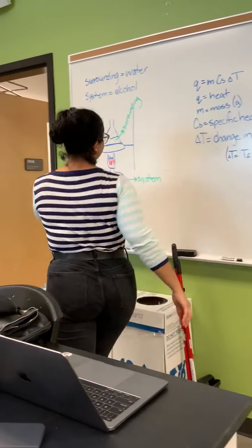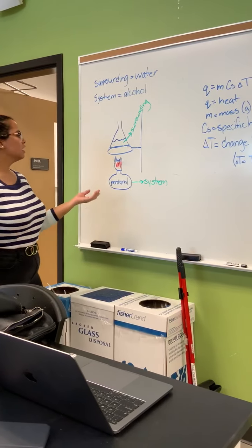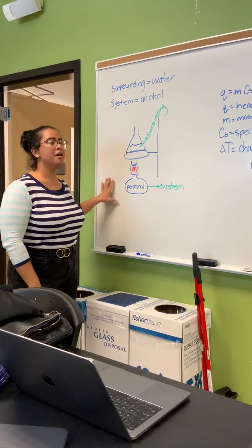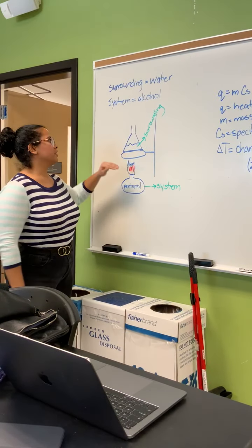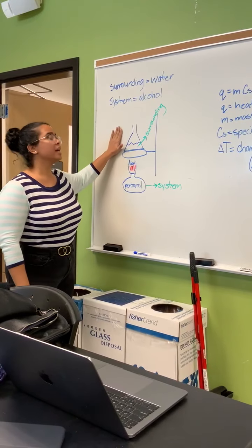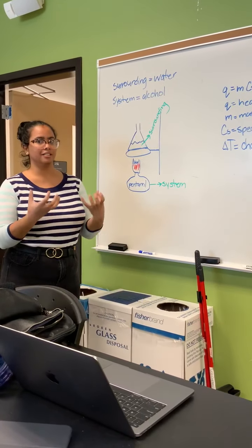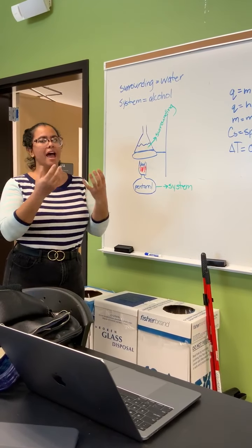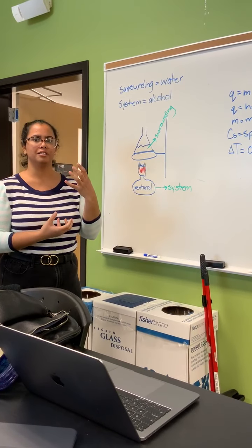So we have that our system in this case will be our alcohol. Today we used pentanol, so that's why we wrote pentanol, but whatever alcohol you use is the system. On the other hand, our surroundings is the water that's inside the Erlenmeyer flask, because the system is releasing heat as it combusts and the surroundings, the water, is gaining the heat released by the system.